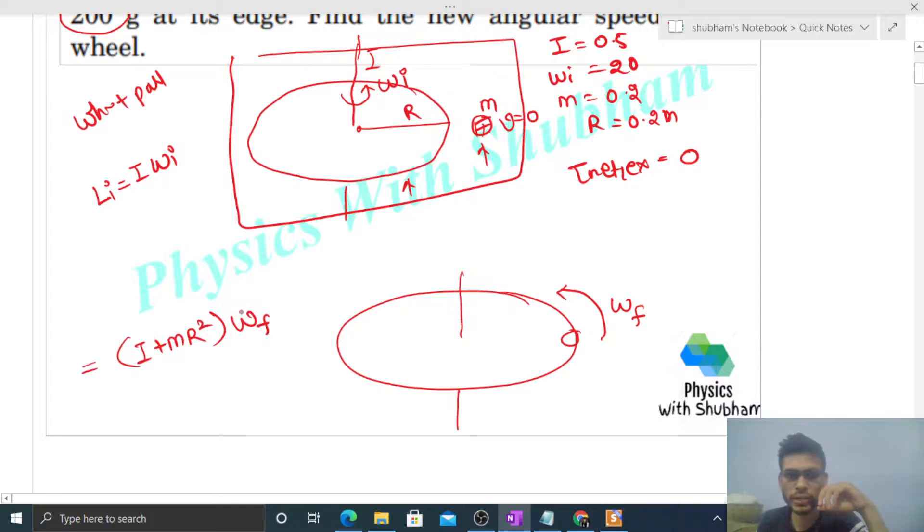You can equate it to initial angular momentum because if net external torque is zero, then angular momentum cannot change. That is the law of conservation of angular momentum. So from here you will get the value of omega final: omega final will be simply I into initial omega divided by (I + mr²). Now you can put the values and get the numerical answer.